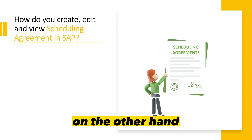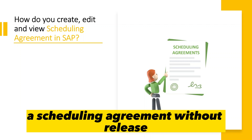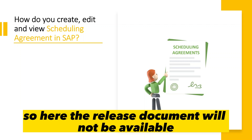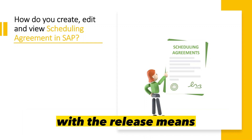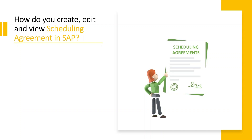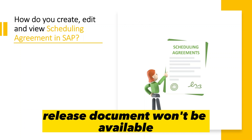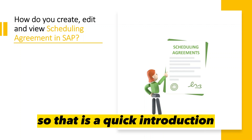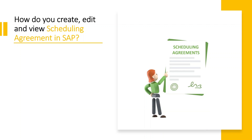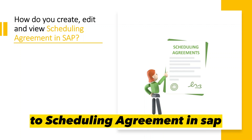On the other hand, a scheduling agreement without release means the release document will not be available. To summarize: with release (LPA) means the release document will be available to check the details; without release (LP) means the release document won't be available. That is a quick introduction to scheduling agreements in SAP.